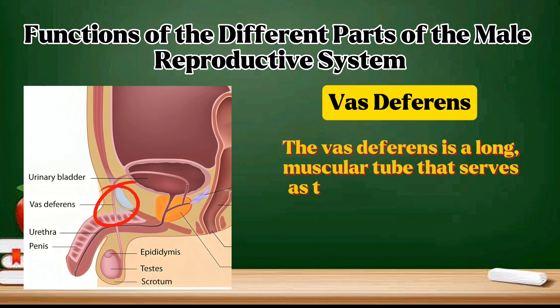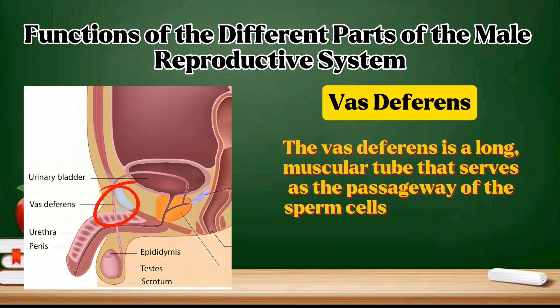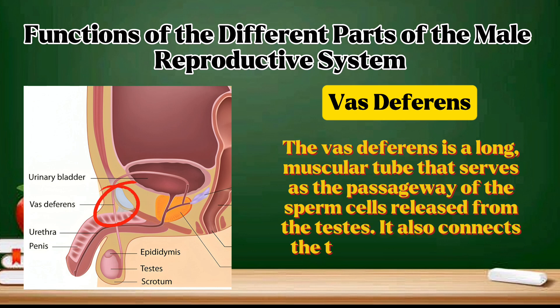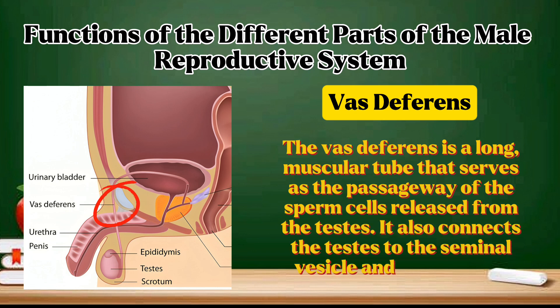Vas deferens: the vas deferens is a long muscular tube that serves as the passageway of the sperm cells released from the testes. It also connects the testes to the seminal vesicle and the urethra.